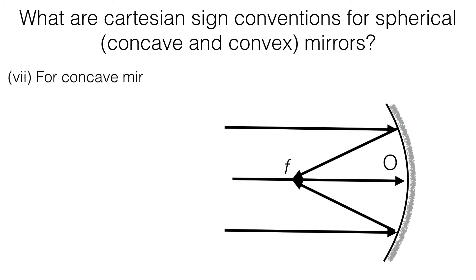For concave mirrors, radius of curvature R and focal length F are taken as negative.